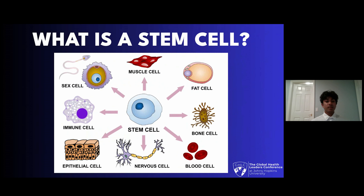Before we get into stem cell therapy, I'd first like to establish what a stem cell actually is. In the human body, stem cells are the building block of all the types of cells in our body, such as muscle and bone cells, and have the capability to differentiate into several types of cells depending on the needs of the body. When new tissue is formed, stem cells transform into a specific type of cell that can be used by the body. For the purposes of this presentation, you can define a stem cell as any type of cell that is undifferentiated, can self-replicate, and can be used to create other types of cells.